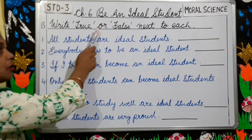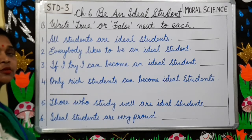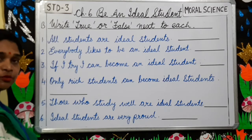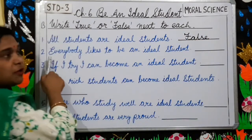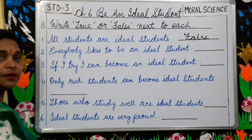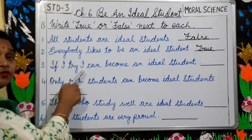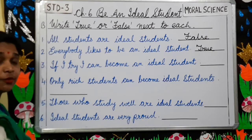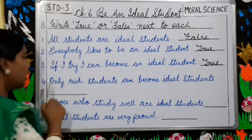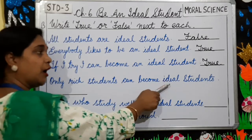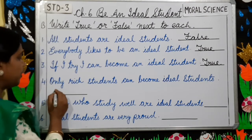Exercise B: Write true or false next to each statement. Number 1: All students are ideal students — False. All students are not ideal students, but all must try to become ideal students. Number 2: Everybody likes to be an ideal student — True. Number 3: If I try, I can become an ideal student — True. Number 4: Only rich students can become ideal students — False. You don't need to be rich to become an ideal student.